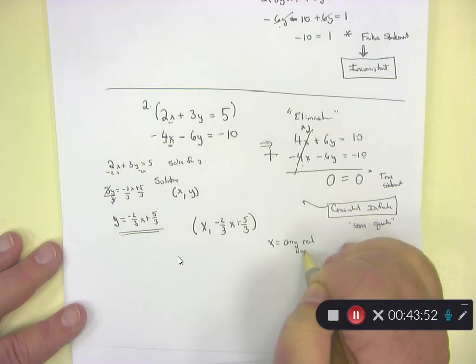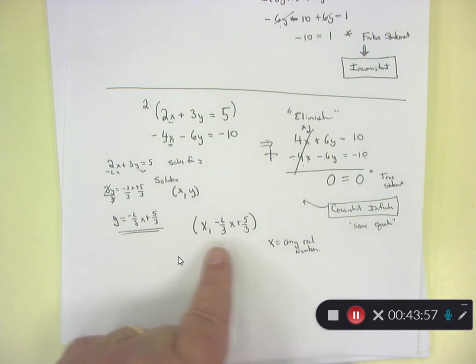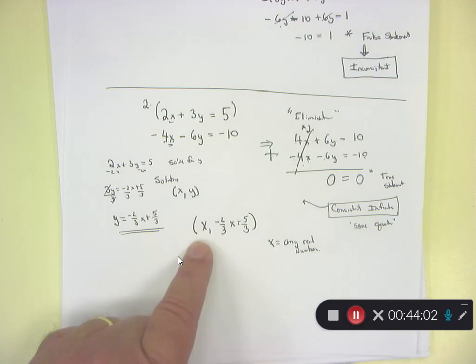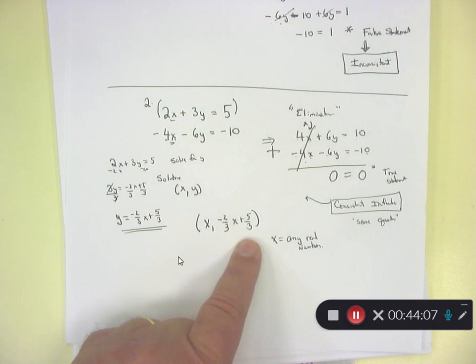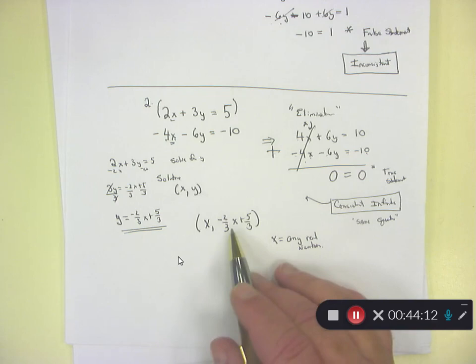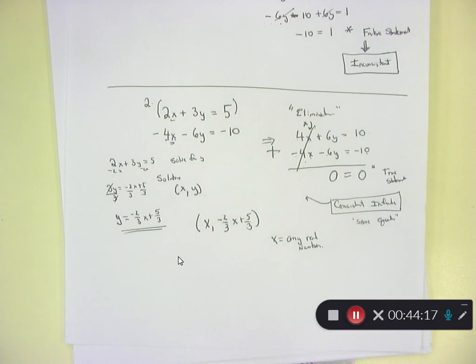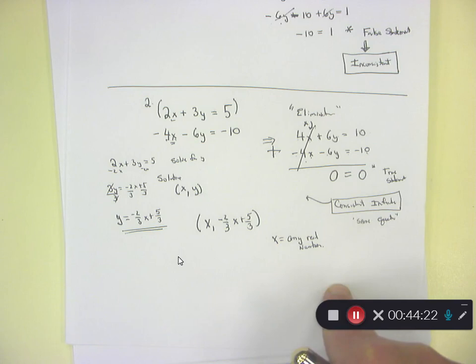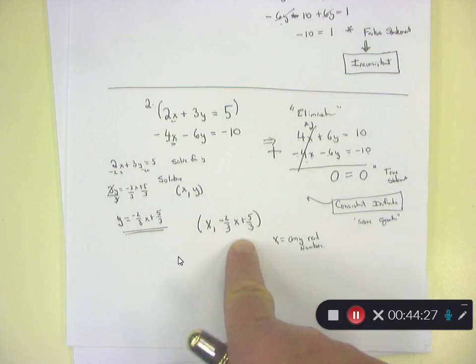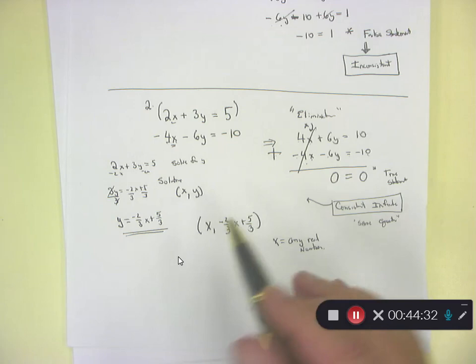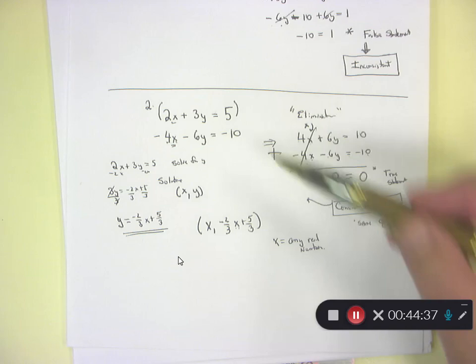For example, if X equals 1, Y equals negative 2/3 times 1 plus 5/3, which is 3/3, which equals 1. So (1, 1) is a solution on this line. If X equals 2, you get another point. You pick any X you want — you just plug it into the equation to get Y. Every point on the line is a solution. That concept of elimination — excellent algorithm.